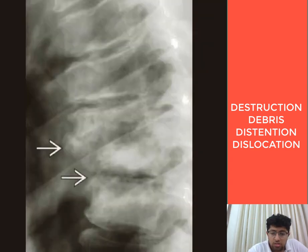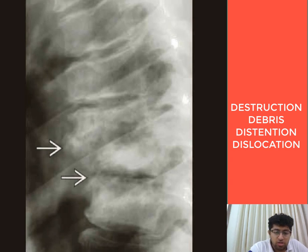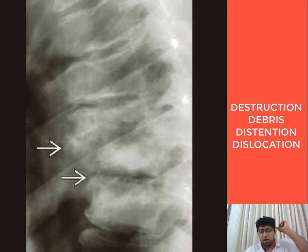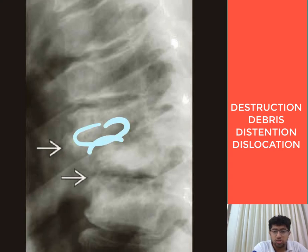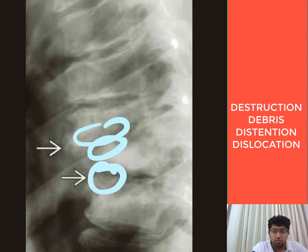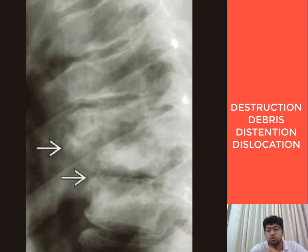This is a neuropathic joint seen in a paraplegic patient. In paraplegic patients, Charcot's joint affects the vertebral bodies. Here we can see continuous two-level end plate destruction of the vertebral bodies occurring due to the neuropathic or Charcot's joint in this paraplegic patient.